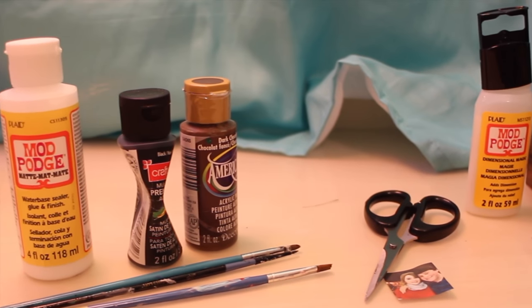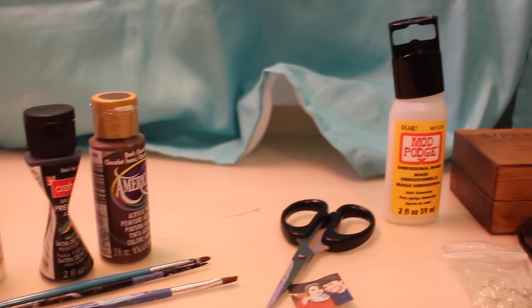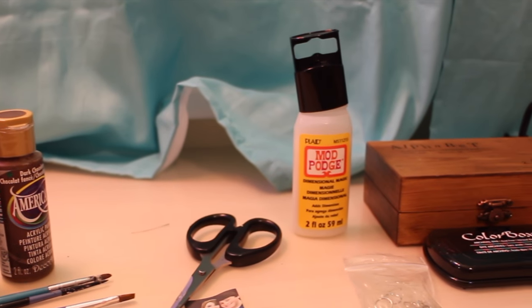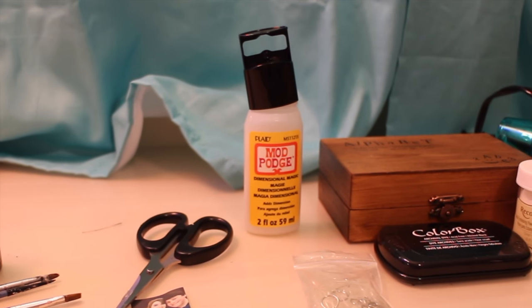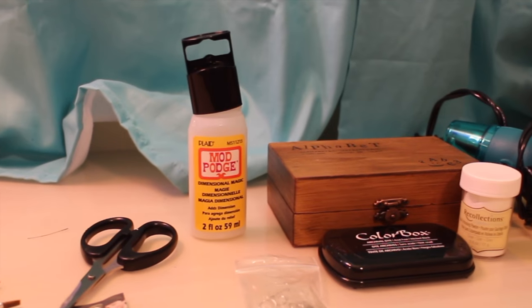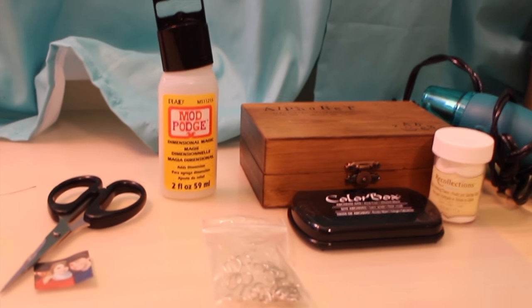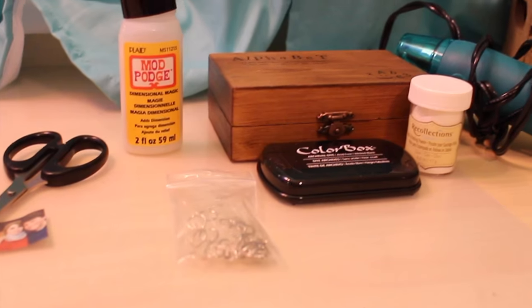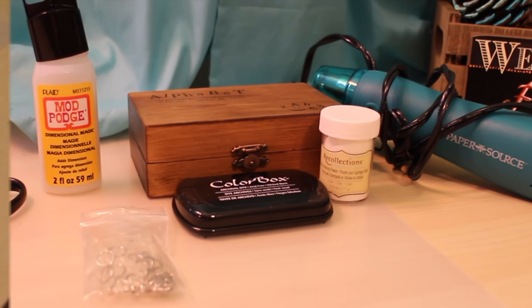You're also going to need decorating supplies like paint. You're also going to need Mod Podge Plain and Mod Podge 3-dimensional. Then scissors and your picture printed out to the same size as your block. Also little rings as I'm showing, and other decorating supplies. I'm using embossing.